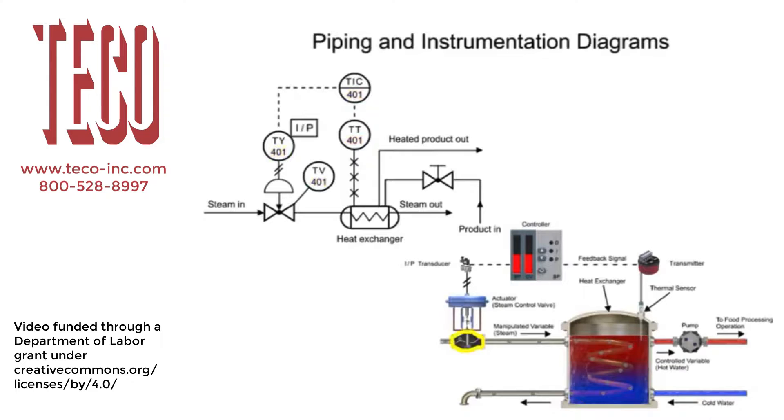The valve that allows steam to flow through the pipe is the symbol with two triangles. In the top portion of the symbols is the functional identifier, and the first letter denotes the measured variable. The first letter of each functional identifier is the letter T, which defines the process of temperature control.